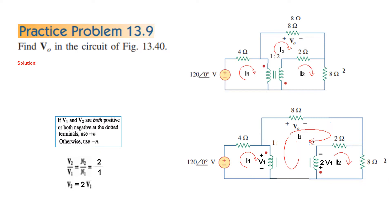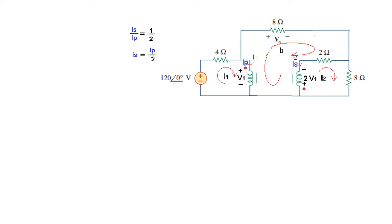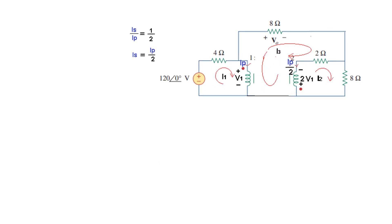Now for the current relations: the primary current IP flows in the primary coil and the secondary current IS flows in the secondary. In a transformer, if the voltage side was doubled, the current is halved — so IS over IP equals 1/2, meaning IS is half of IP. We replace IS by IP/2, and now we are all set to write the mesh equations.